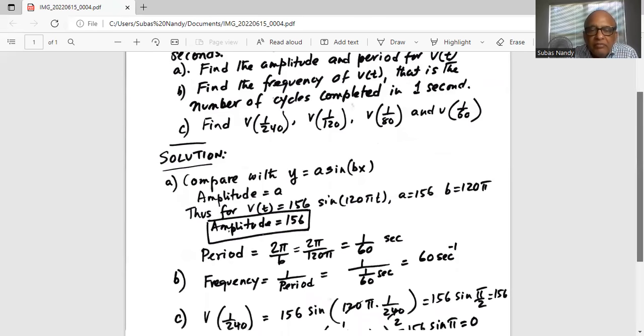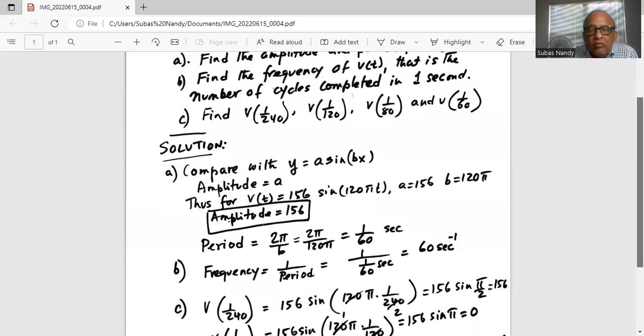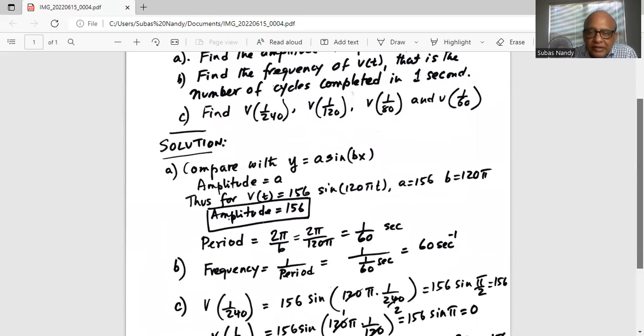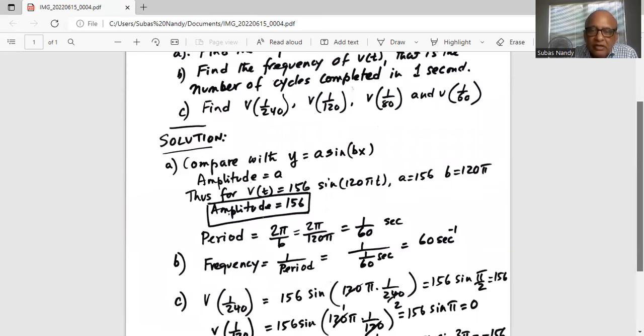Answer for part b, frequency is 1 over period, or 1 over 1 over 60 seconds. So it is 60 seconds to the power of minus 1 or 60 hertz. 1 over second is hertz unit.